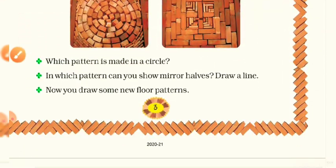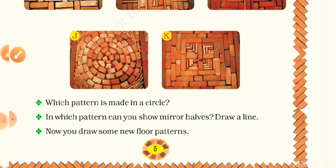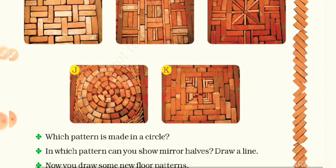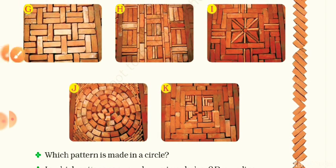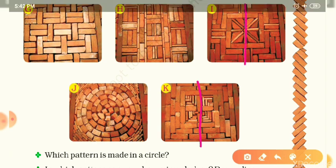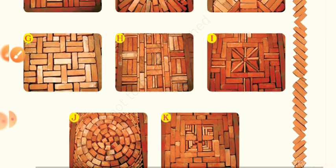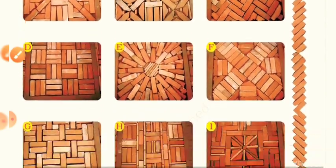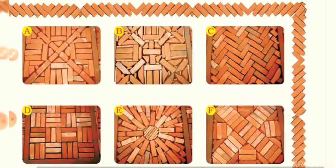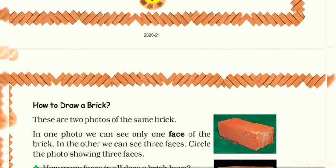Now, in which pattern can you show a mirror half? Do you know what a mirror half is? Two sides will look the same. Which patterns have mirror halves? Yes — K, I, H, and G also have mirror halves. Many patterns have mirror halves, including A, B, and C. Now you draw some new floor patterns — this is your work to do.